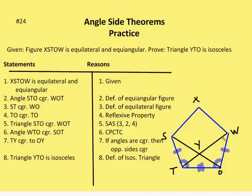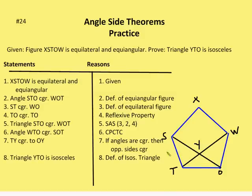We can see that triangles STO and WOT are congruent by side-angle-side. Now we can say that angle WTO and angle SOT are congruent by CPCTC. Since we have congruent angles, the sides opposite them — YT and YO — are going to be congruent. Therefore, triangle YTO is isosceles by definition of an isosceles triangle, which requires at least two sides to be congruent.